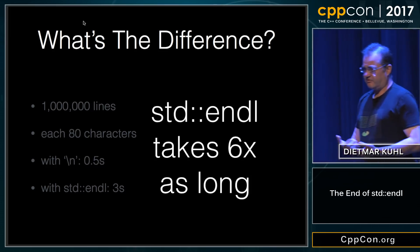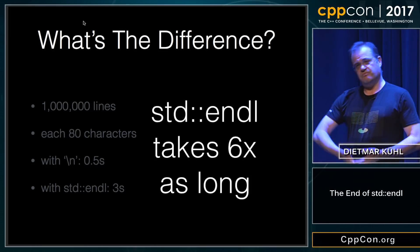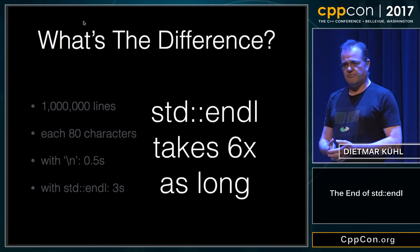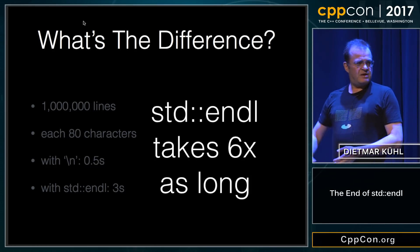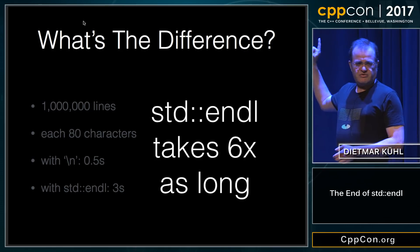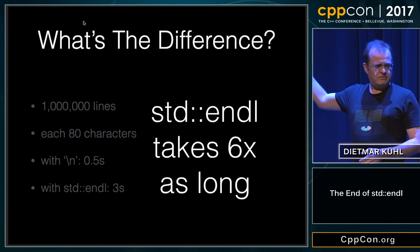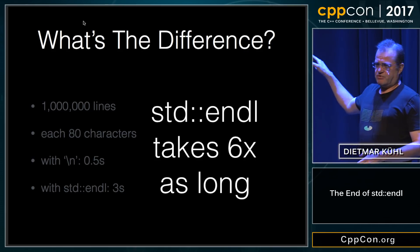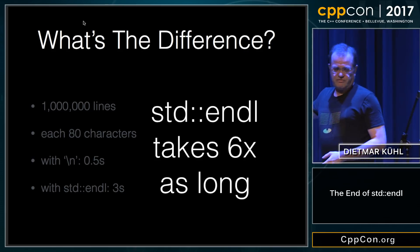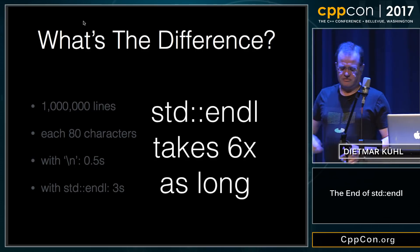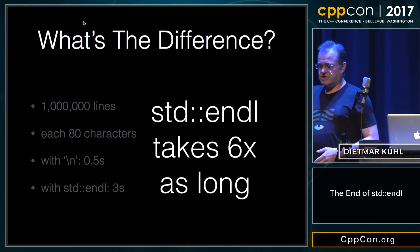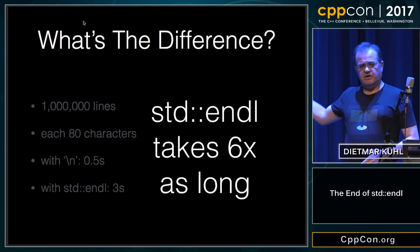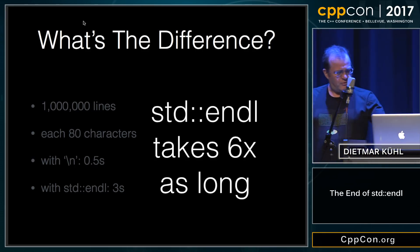I've actually worked in multiple places where people have had problems with IO stream performance, and it was entirely down to endl. IO stream is actually not slow — it's actually fairly fast. But if you misuse it, it becomes slow.